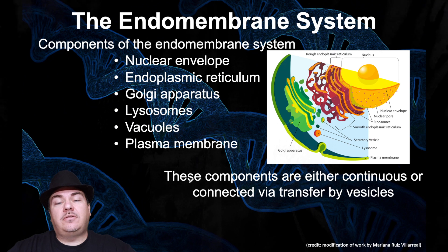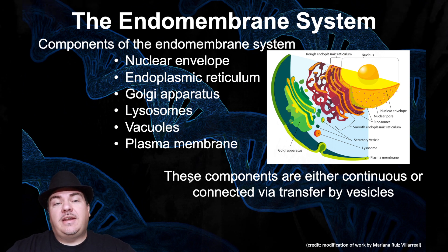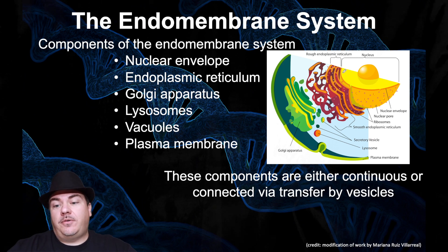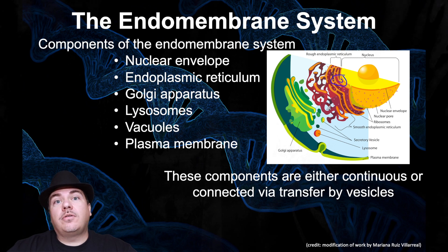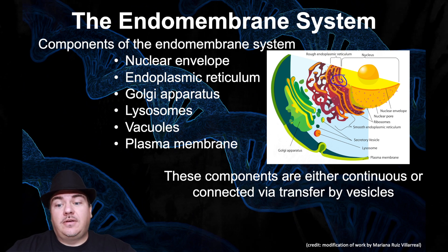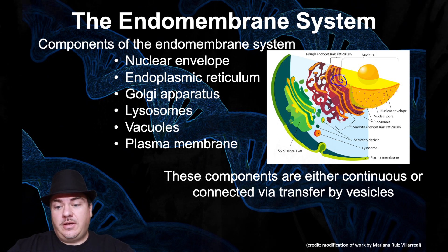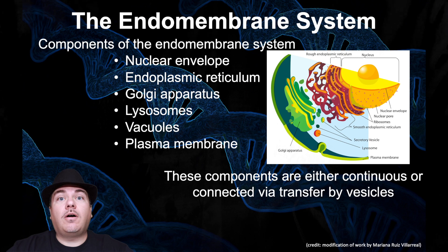Before we discuss each of the different parts of the endomembrane system, something to note is that all these different parts are connected together because they're either physically attached to each other — for example, the nuclear envelope and the ER are physically attached — or they're connected via transfer vesicles. As a preview, the rough ER is going to be building proteins, put those proteins into a transport vesicle, and send that vesicle to the Golgi apparatus. So all parts of the endomembrane system are physically connected.